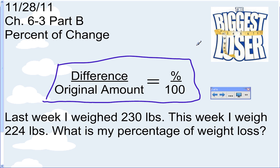If you've ever seen the TV show The Biggest Loser, then you've seen percent of change. They don't just measure how much weight you've lost — they don't say you're the biggest winner because you lost 100 pounds. They tell you your percent of weight loss so that it varies based upon your starting weight. Someone who weighs 300 pounds when they start is going to have to lose more weight than somebody who starts at 200 pounds.